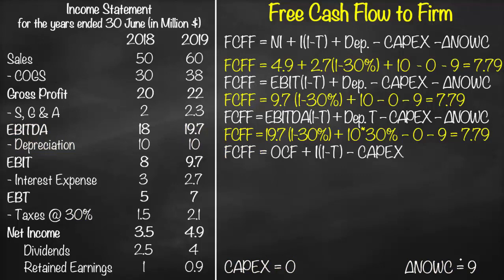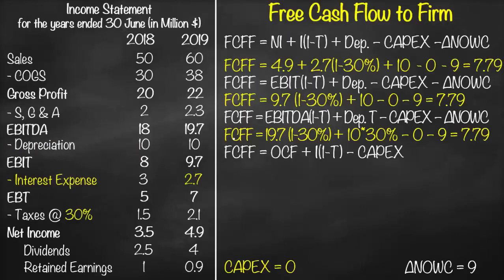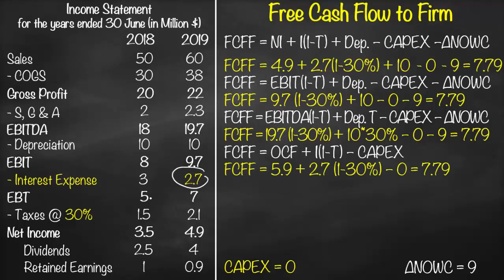A fourth formula is: FCFF = Operating Cash Flow + Interest × (1 − t) − CapEx. We get operating cash flow from the statement of cash flows, which has three categories: cash flow from operations, financing, and investment. Net cash flow from operations is 5.9, plus interest of 2.7 × (1 − 30%), minus CapEx of 0. This gives free cash flow to firm of 7.79.